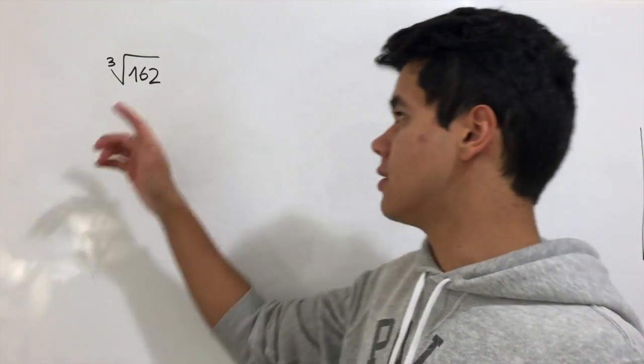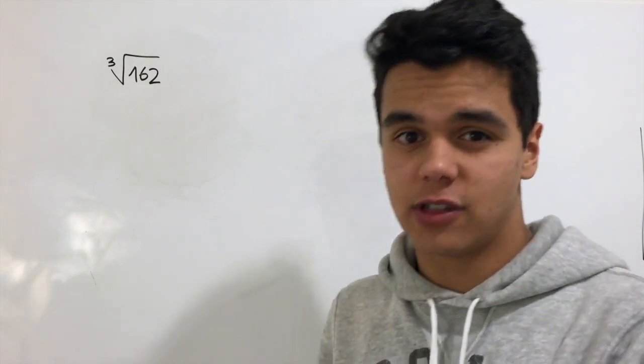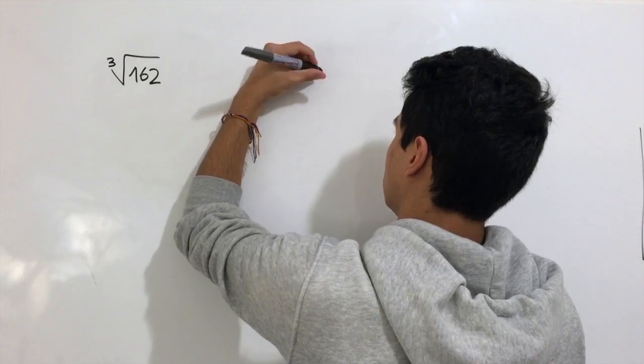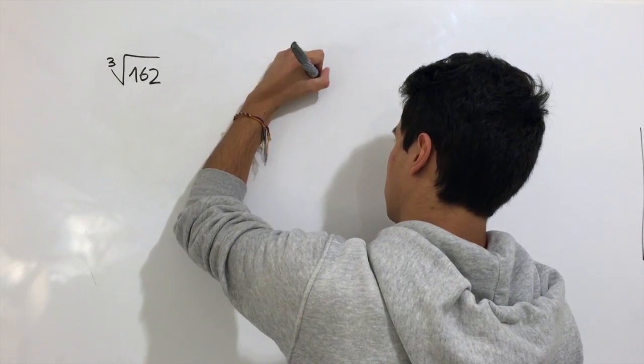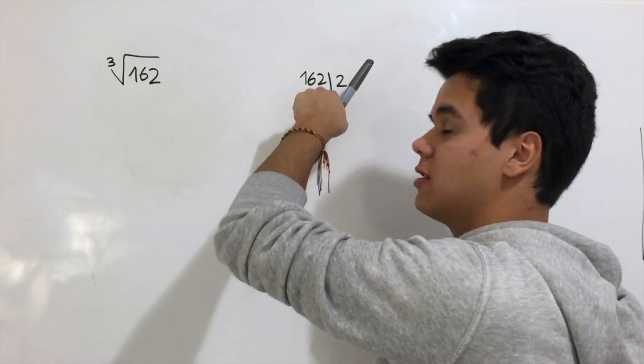Now we have another example. It's the cubic root of 162. First step is again factor. We have 162. We can divide it by 2 because the last number is even.